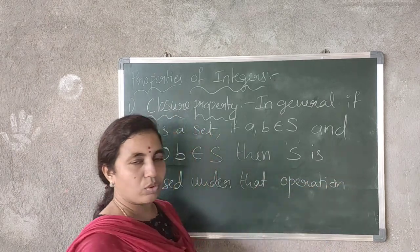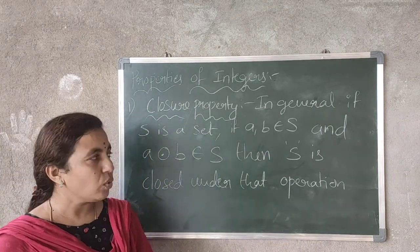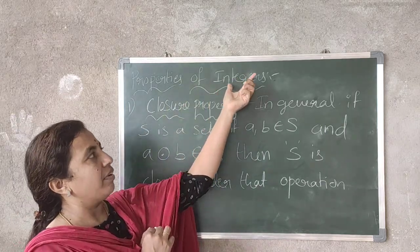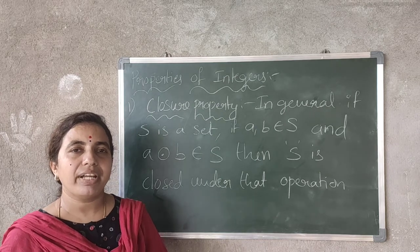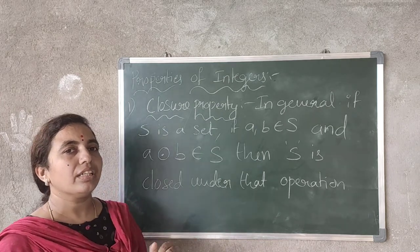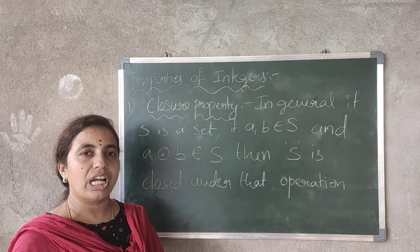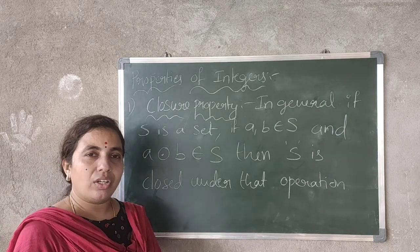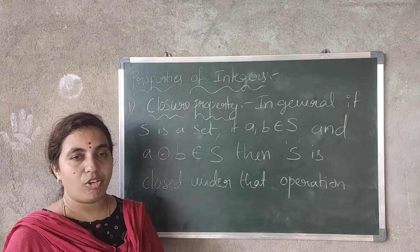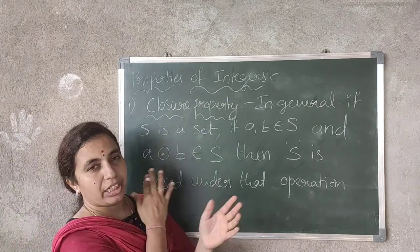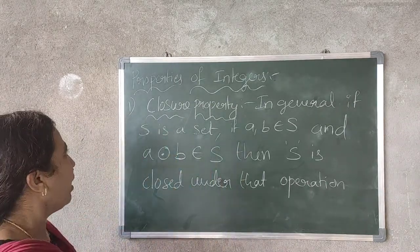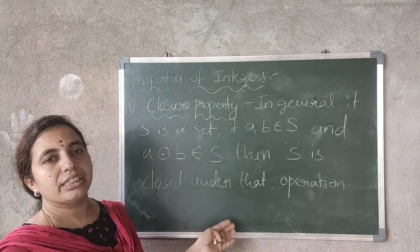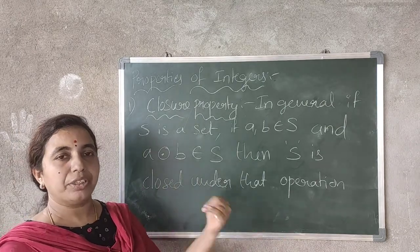So this is for a particular set S. But here, for what we are checking? For integers — whether integers are closed under addition or not, whether integers are closed under subtraction or not, whether integers are closed under multiplication, whether integers are closed under division or not — we have to check. So first I will go with addition, and then we will go for subtraction, multiplication, and division.